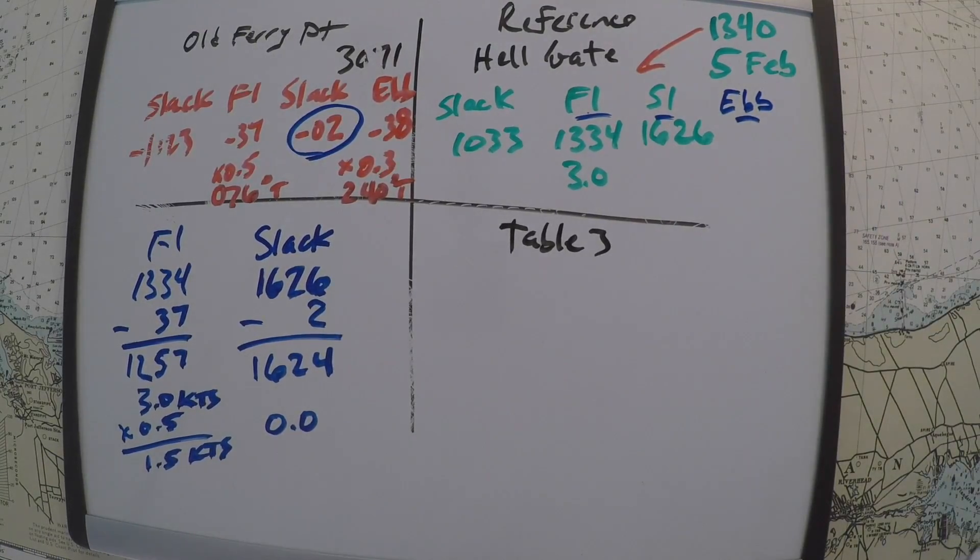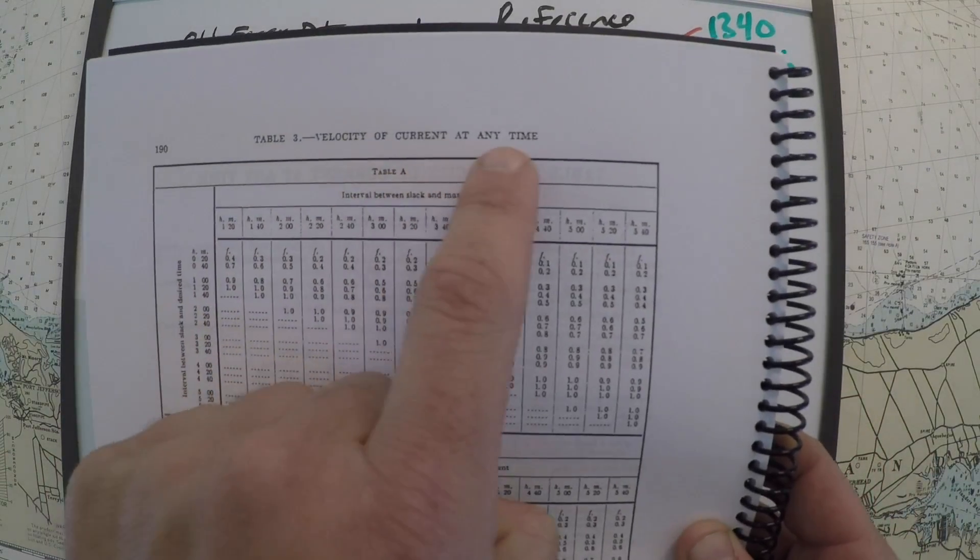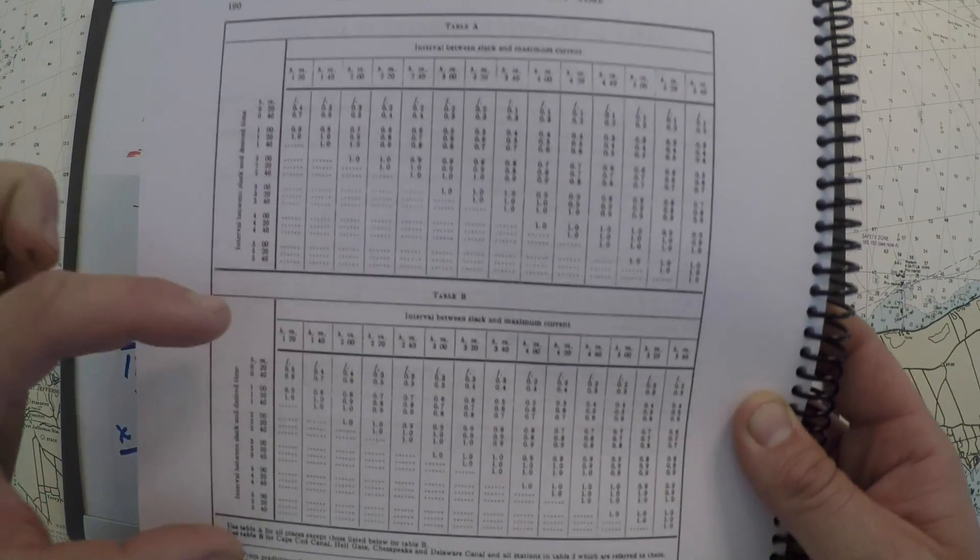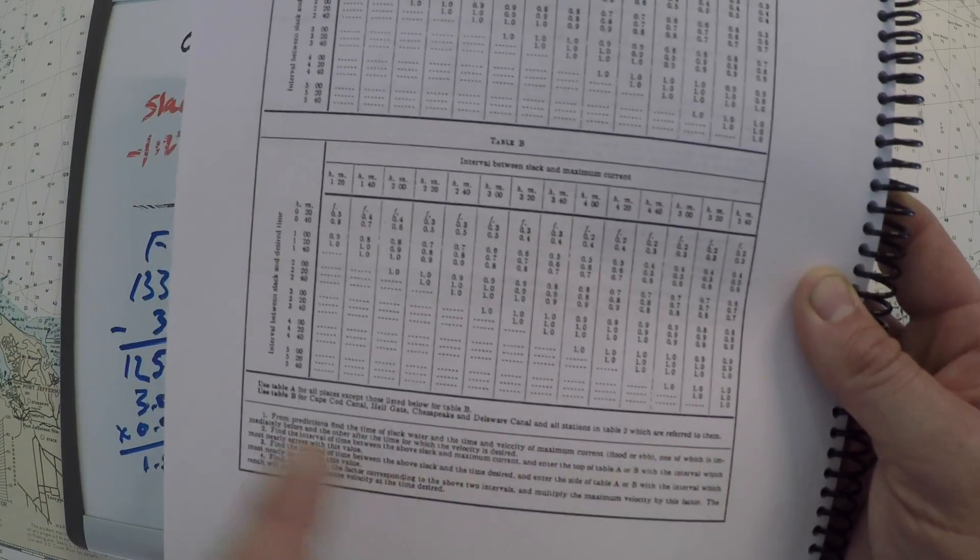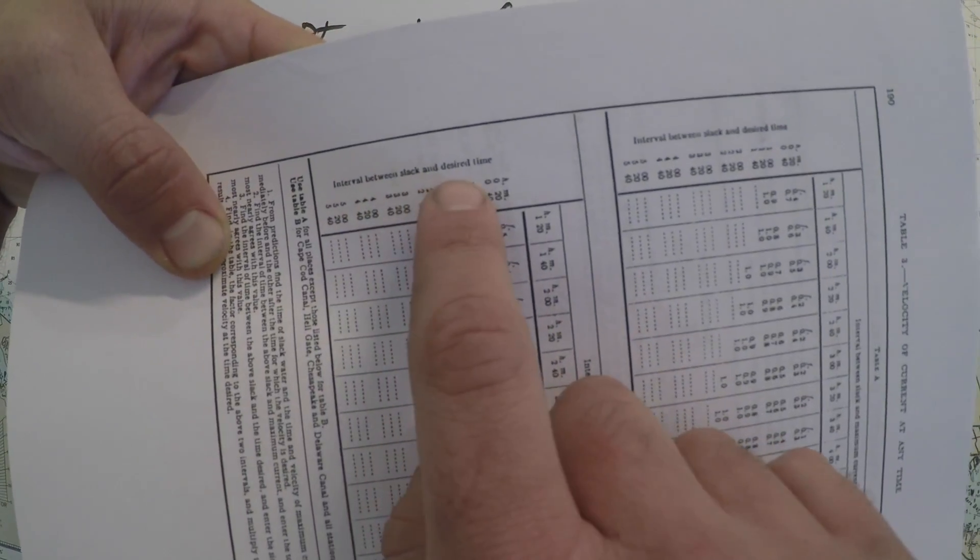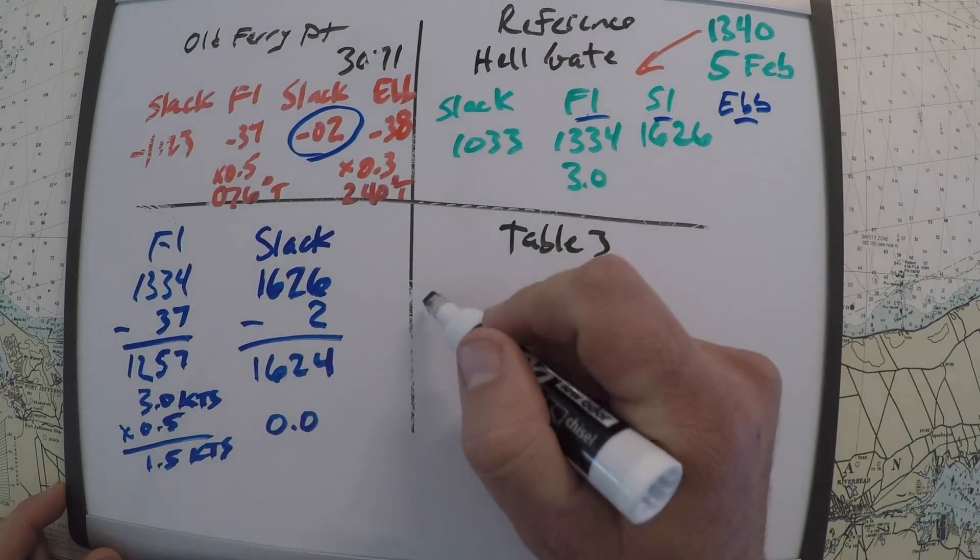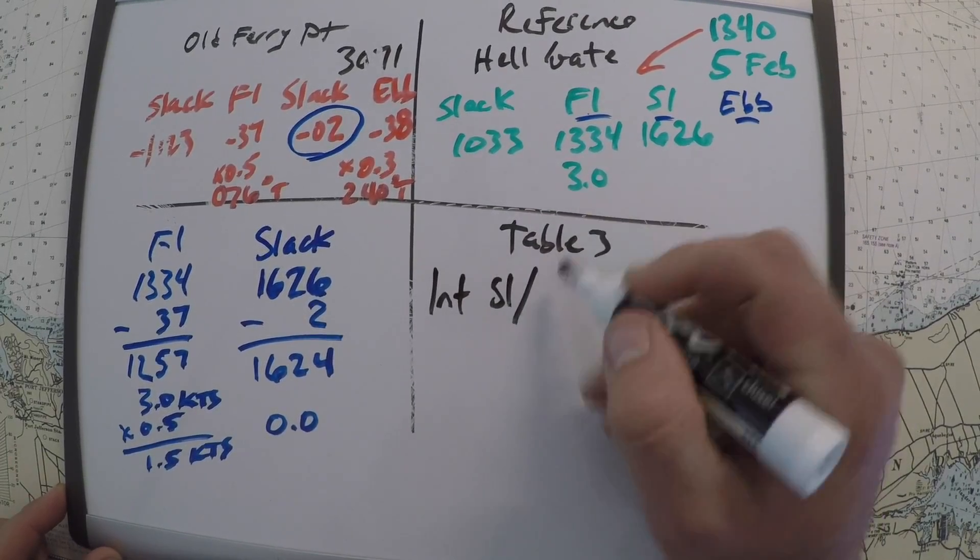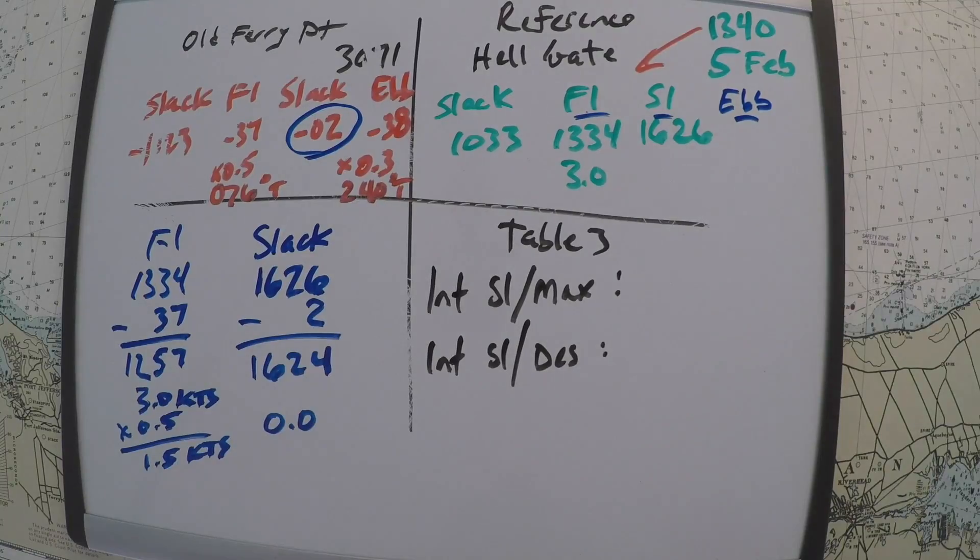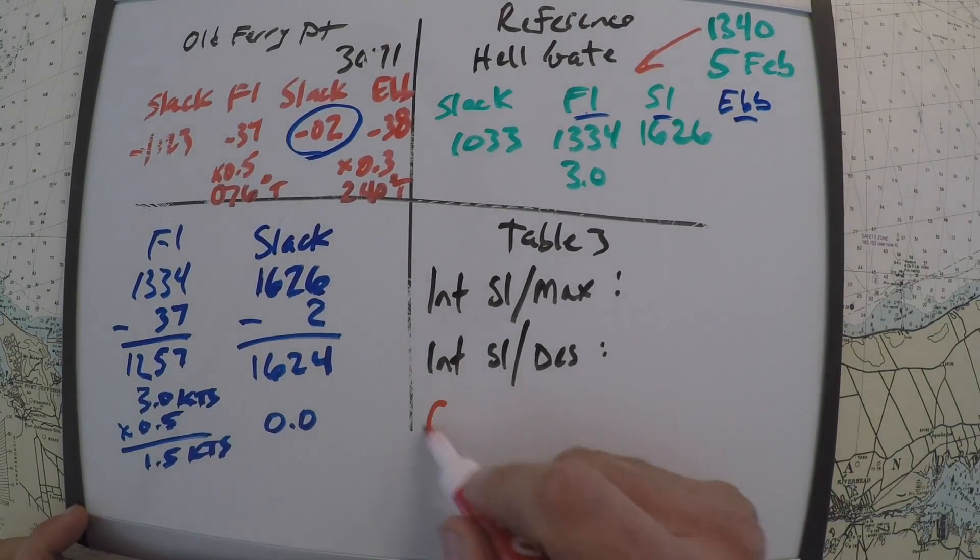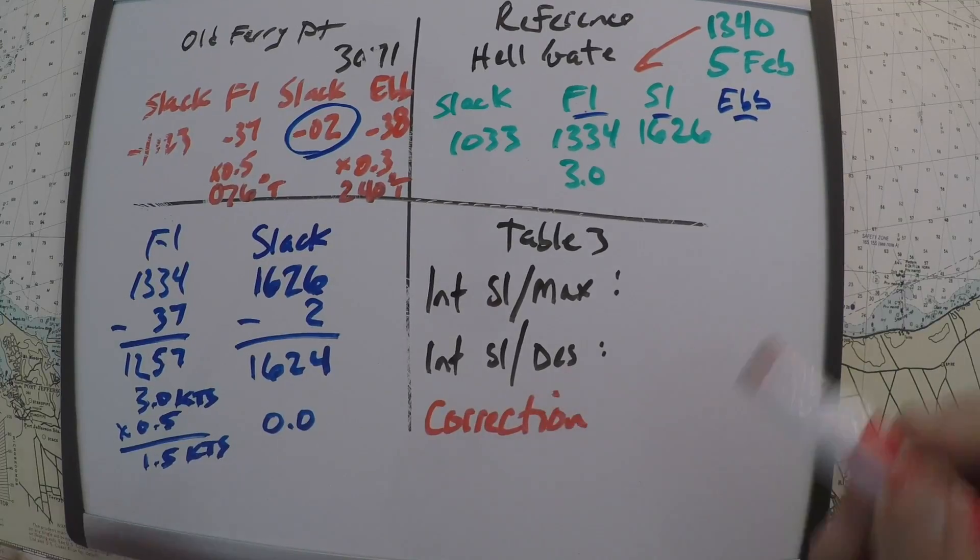So looking at table 3 in the back of the tidal current tables, table 3 gets you the velocity of the current at any time. And it's got two tables, table A and table B. Down here it says table B is for Cape Cod Canal Hell Gate, which is what we're using, and a few other places, whereas table A is for everything else. So we're going to use this table, and our variables are the interval between slack and desired, and the interval between slack and max. So we need to find those now. So the interval between slack and max, and the interval between slack and desired. So if we have those two times, we're going to get a correction out of it.